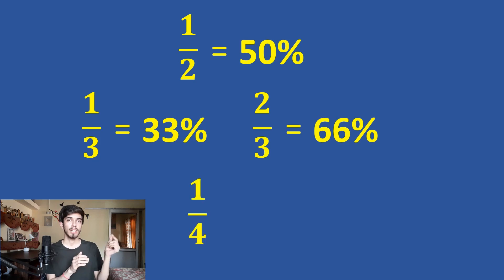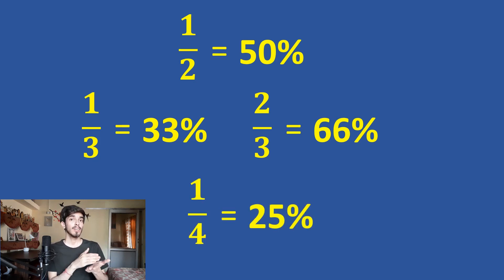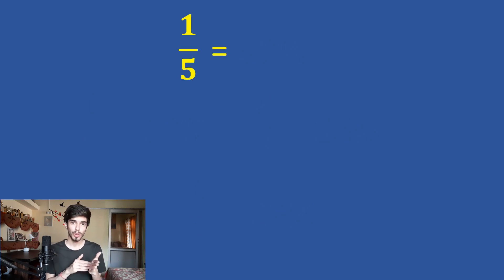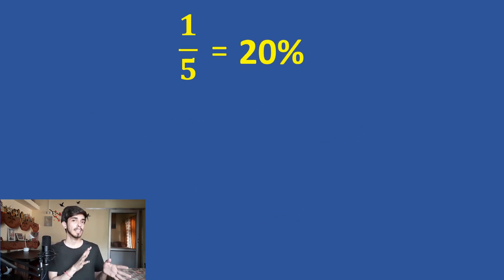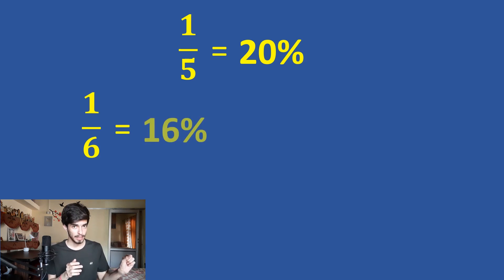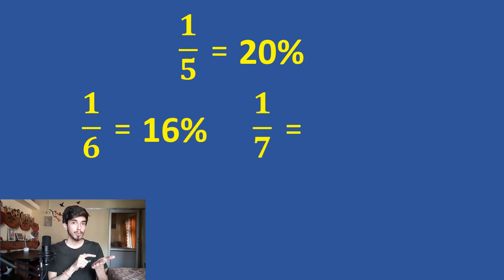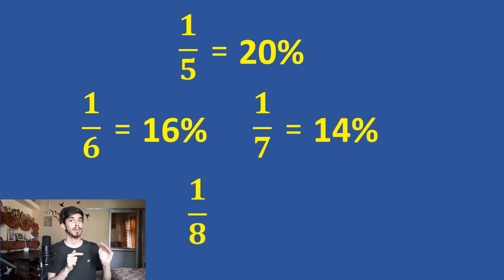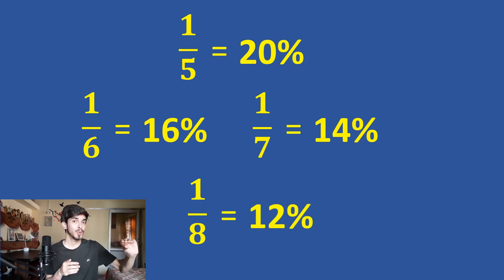You should remember the base fractions. What is 1 by 4? It is easy — 0.25, so 25%. 1 by 5 is 0.2, so 20%. Now 1 by 6 — this is what most people do not remember — it is 0.16, which is 16%. What is 1 by 7? It is 0.14, that is 14%. What is 1 by 8? It is 0.12, that is 12%. Notice the pattern: 16, 14, 12 — remember it like that.